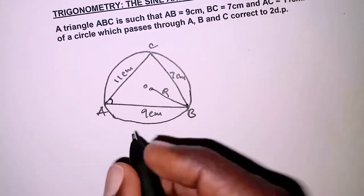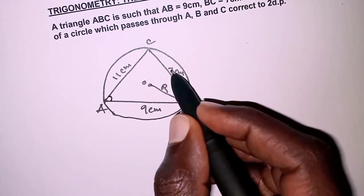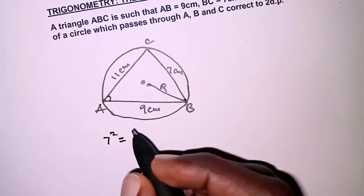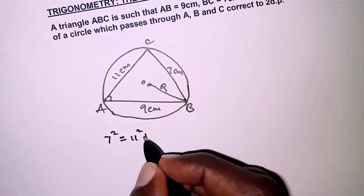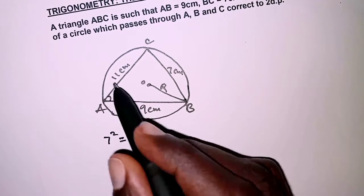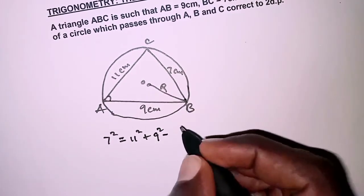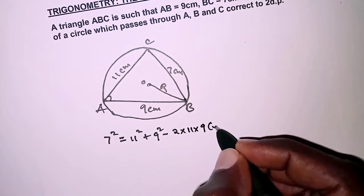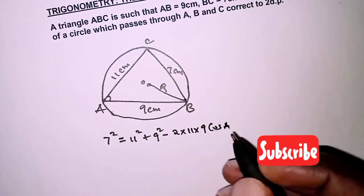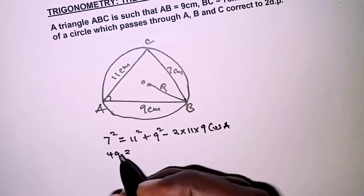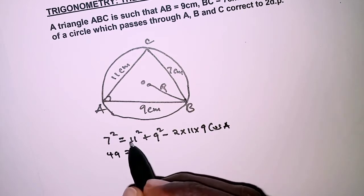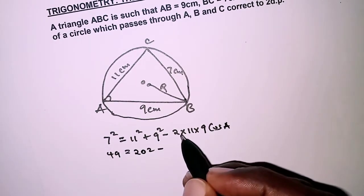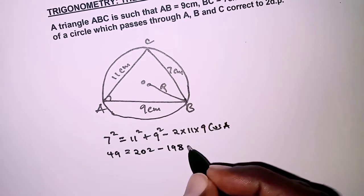In order to get angle A, we apply the cosine rule. The opposite side of angle A is 7, so: 7 squared equals 11 squared plus 9 squared, minus twice 11 by 9, cosine of angle A. This gives us 49 equals 121 plus 81 — that is 202 — minus 198 cosine of A.